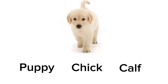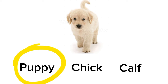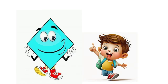Now coming towards the next. It is baby dog. What is its name? It is an easy one. Yes! Its name is Puppy. Yes! Good job! We all are doing a very good job. It means you all now know the names of animals and their babies.